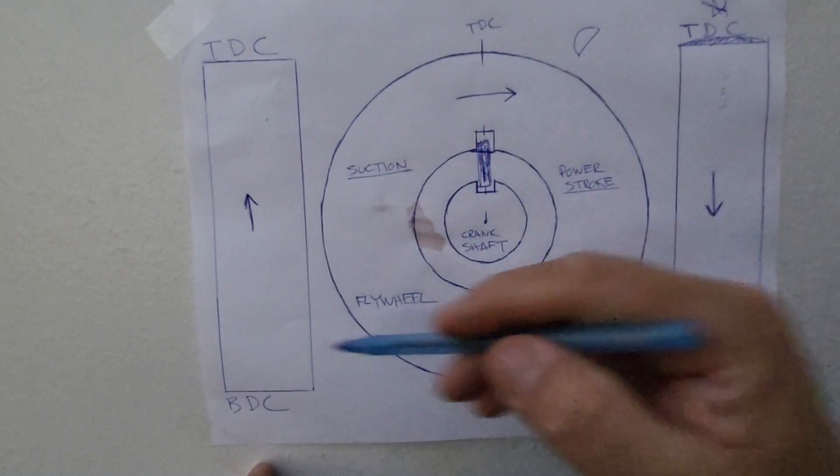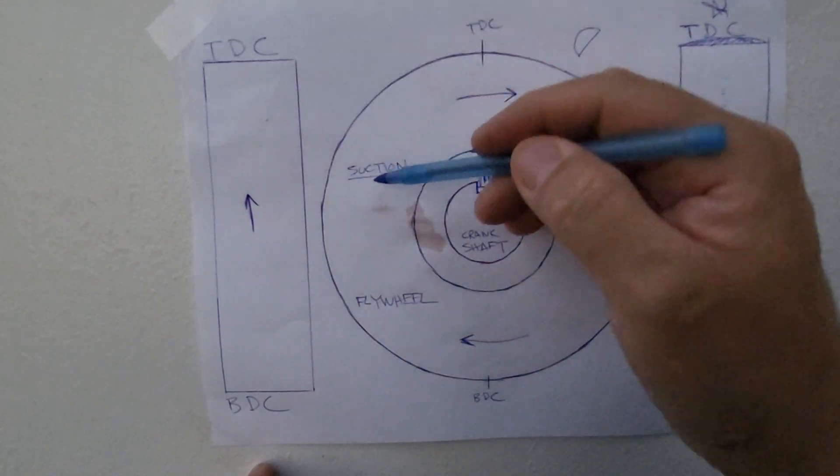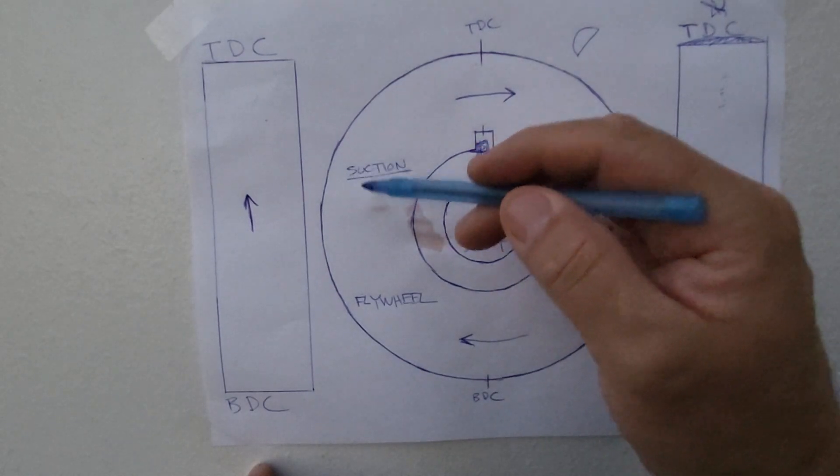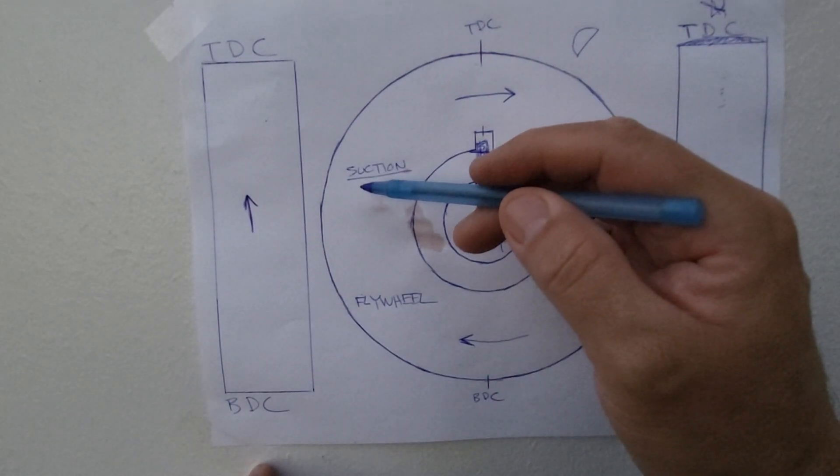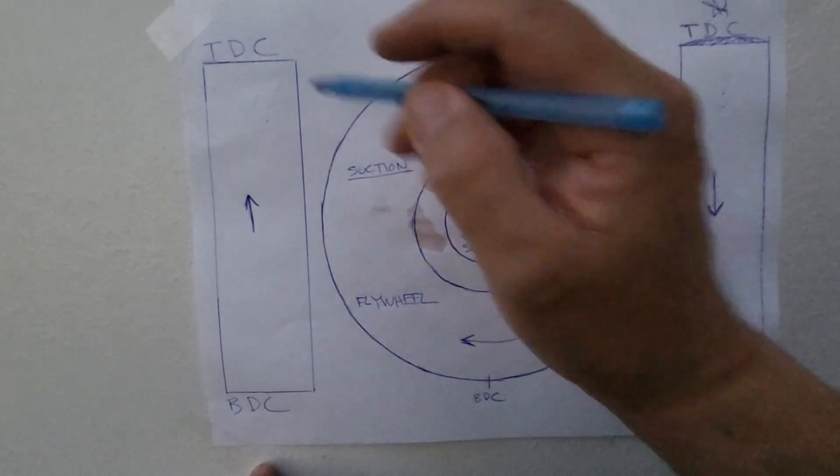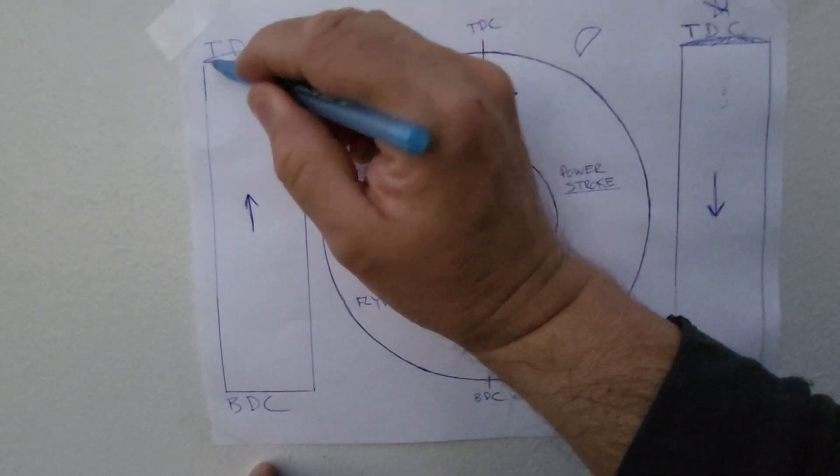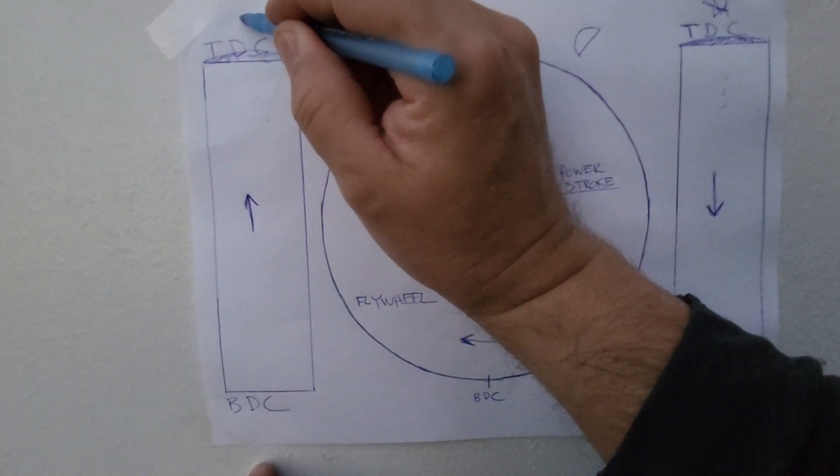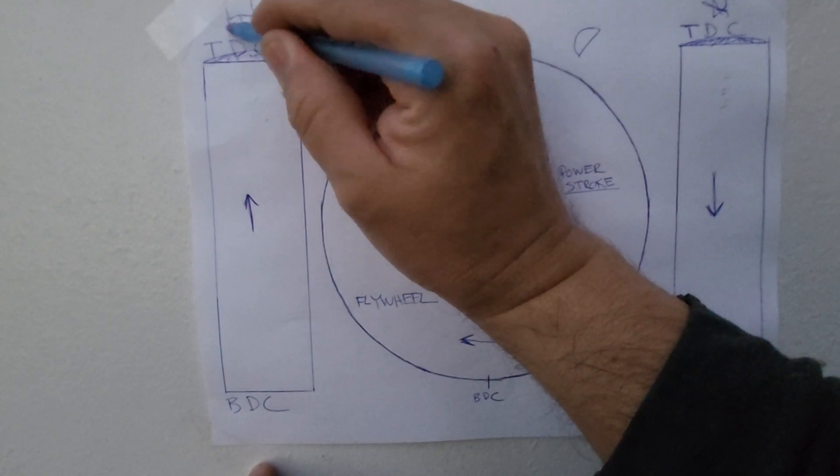So this is the power stroke. This is the suction stroke. The suction means that it is sucking the gas or the fumes from the carburetor and it's going to the spark plug. So we're going to put a node here, spark plug.